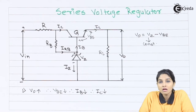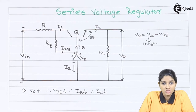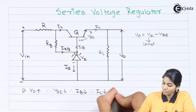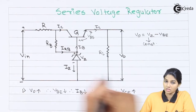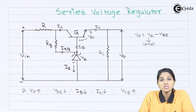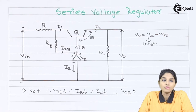As collector current Ic is reduced, the collector-to-emitter voltage VCE increases. This increase in the value of VCE regulates the output voltage V0.